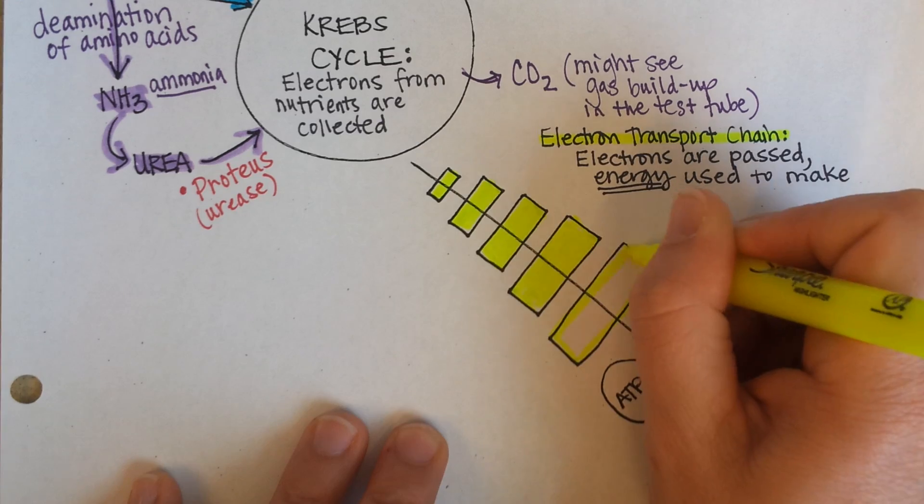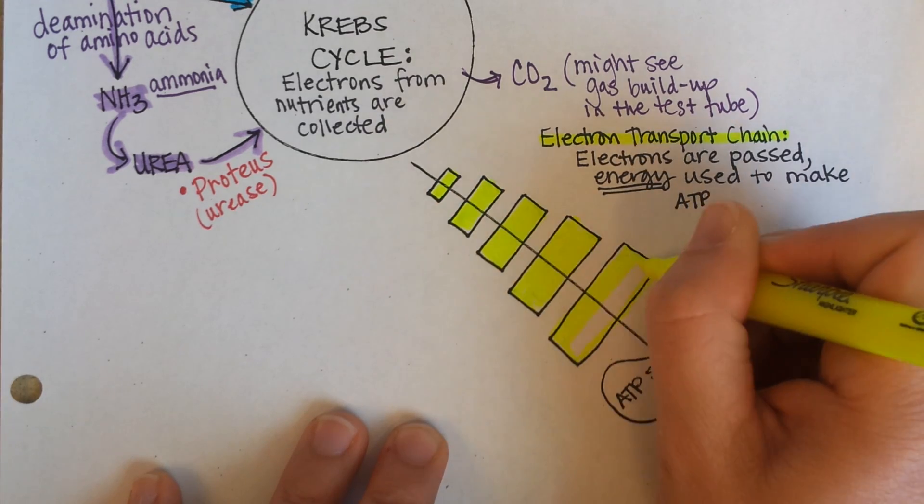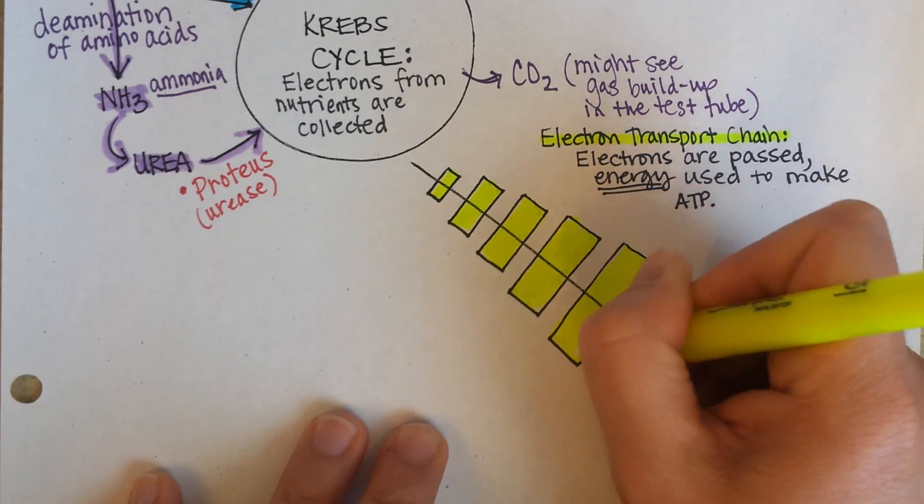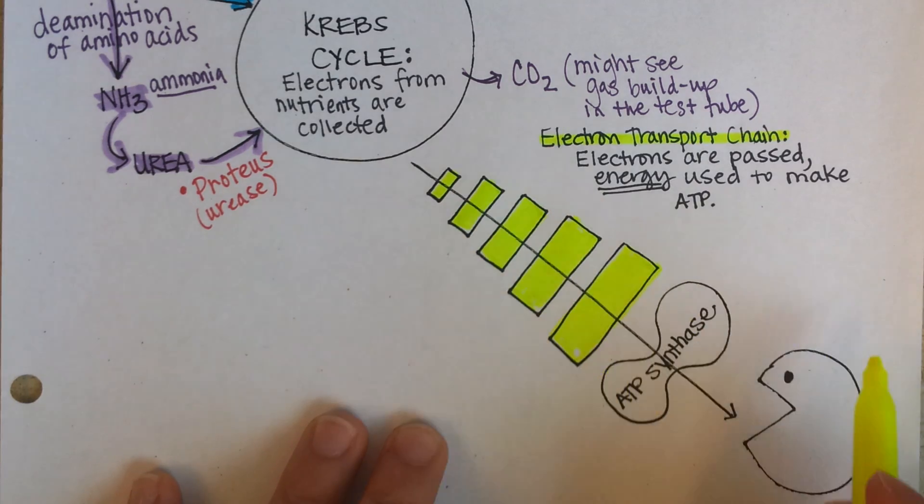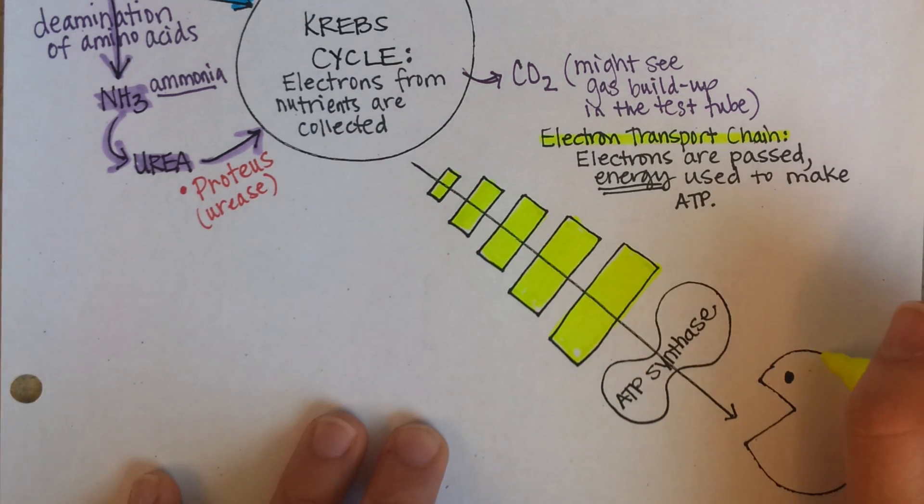If the electrons are attracted to the magnets and each magnet is stronger than the one before it, then the electrons are gonna go hop, hop, hop down to the biggest magnet of all,